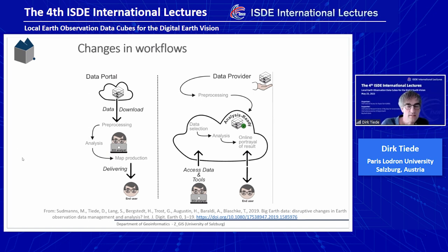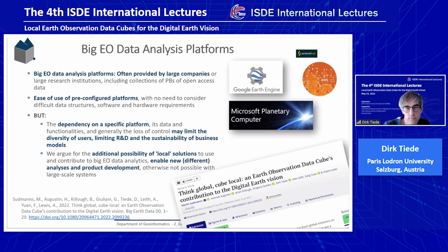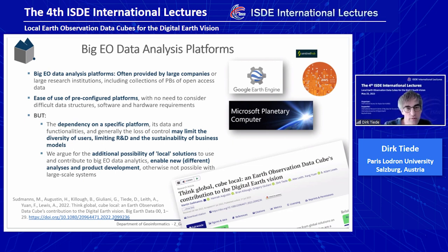We also have to react differently to these new developments. There is an advent of many big EO data analysis platforms — most of which you know, maybe Google Earth Engine being the most prominent one, with Microsoft Planetary Computer, and even Amazon providing web space for open-source data via the Copernicus Data Space Hub, and so on. These big EO data analysis platforms are often provided by large companies or large research institutions. They collect petabytes of open-access data — open-source data paid for by all of us, the taxpayers. They offer ease-of-use, pre-configured platforms where you can, on your fingertips, analyze a lot of data, and a lot of publications in recent years make use of these platforms.